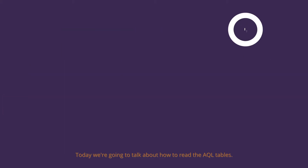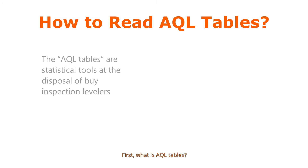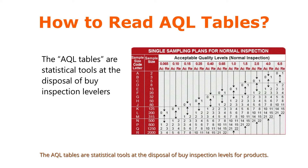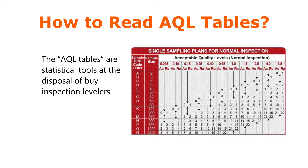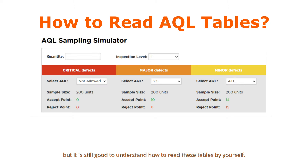Today we are going to talk about how to read the AQL tables. What are AQL tables? The AQL tables are statistical tools at the disposal of buyers and inspection planners for product inspections. They are an industry standard, and most suppliers involved in international trade are familiar with them. Some specialized quality inspection software will show all the numbers automatically, but it is still good to understand how to read these tables by yourself.